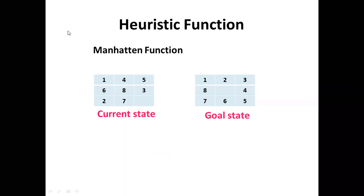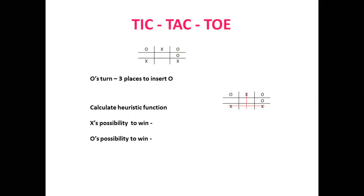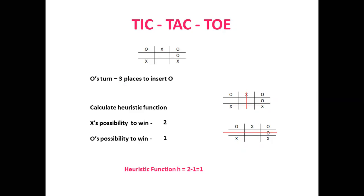This is another way of calculating the heuristic function for a puzzle problem. Next, consider the tic-tac-toe problem. Based on the problem, the function used for calculation also varies. For tic-tac-toe, the heuristic function is the possibility of X winning minus the possibility of O winning. For example, if X can win in two ways along horizontal and vertical lines, and O has only one possibility, the heuristic value is two minus one, which equals one. These are all different ways in which a heuristic function is calculated.